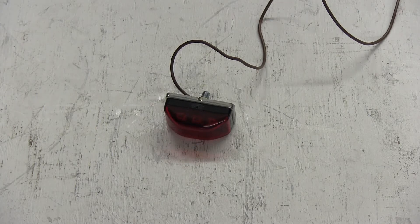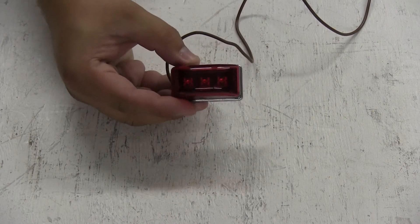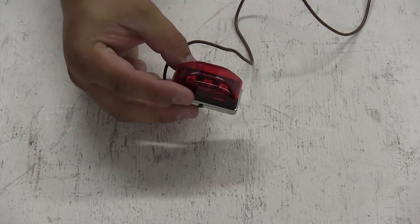Here we have Optronics Sealed Mini Rectangular LED Trailer Clearance Light, part number MCL95RB.